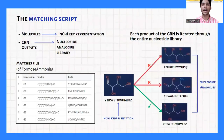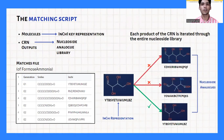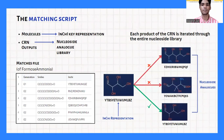We then ran the matching script which converted all the molecules into their inchi-key representations. Then we found the matches between each CRN output and the nucleoside analog library. Each product of the CRN was iterated through the entire nucleoside library comparing their inchi-keys.